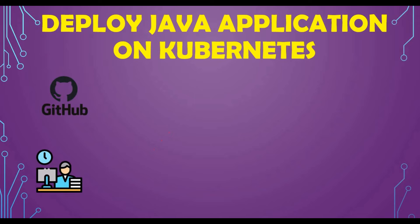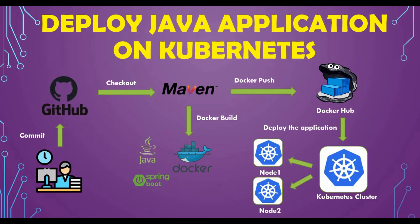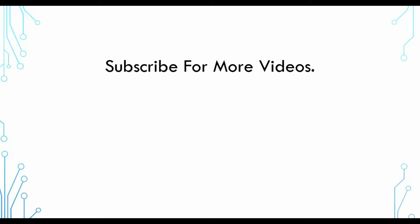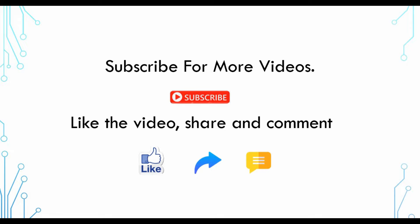That's all for this tutorial. We've covered the complete process: Maven build, creating a Docker image, pushing to Docker Hub, and deploying to a Kubernetes cluster — all done manually so you understand the concept using command lines. I hope this tutorial is informative. To see more videos like this, please subscribe to my channel, like my videos if you find them helpful, share with others, and give your feedback in the comment section. Thank you for watching.